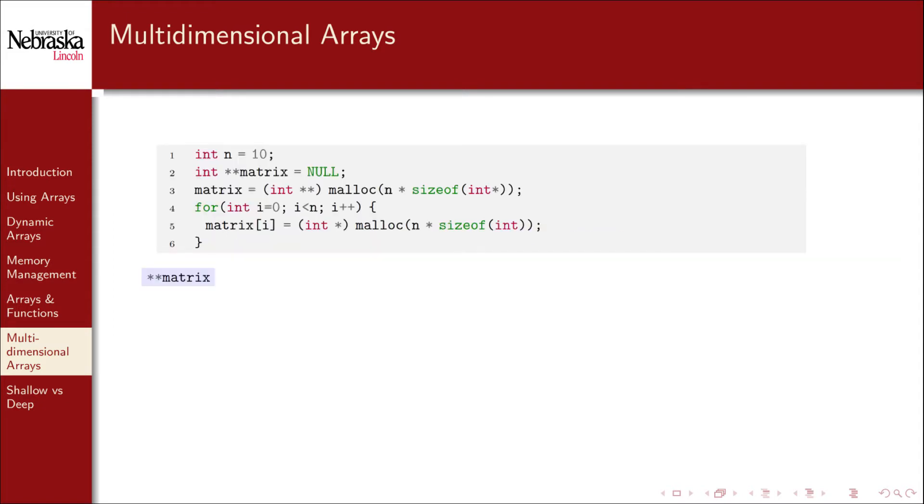Let's visualize this code snippet. Line 2 sets up our pointer pointer. Line 3 initializes the array of pointers, which are indexed normally 0 through n minus 1. However, instead of a normal integer, these are integer pointers.